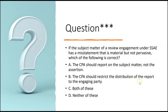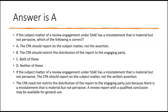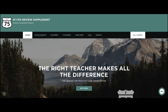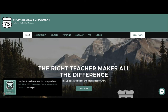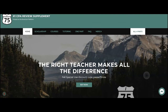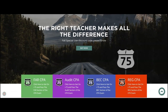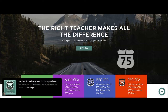B — the CPA should restrict the distribution of the report to the engaging party: no, A is correct. If the subject matter has a misstatement that is material but not pervasive, the CPA should report on the subject matter, not on the written assertion — and the CPA need not restrict distribution of the report just because there's a material but not pervasive misstatement. I'm Darius Clark from I-75 CPA Review. If you found this audit video easy to follow, the right teacher makes all the difference. If you need help passing audit or any other part of the CPA exam, get yourself on I-75 CPA Review and take it to your next pass.